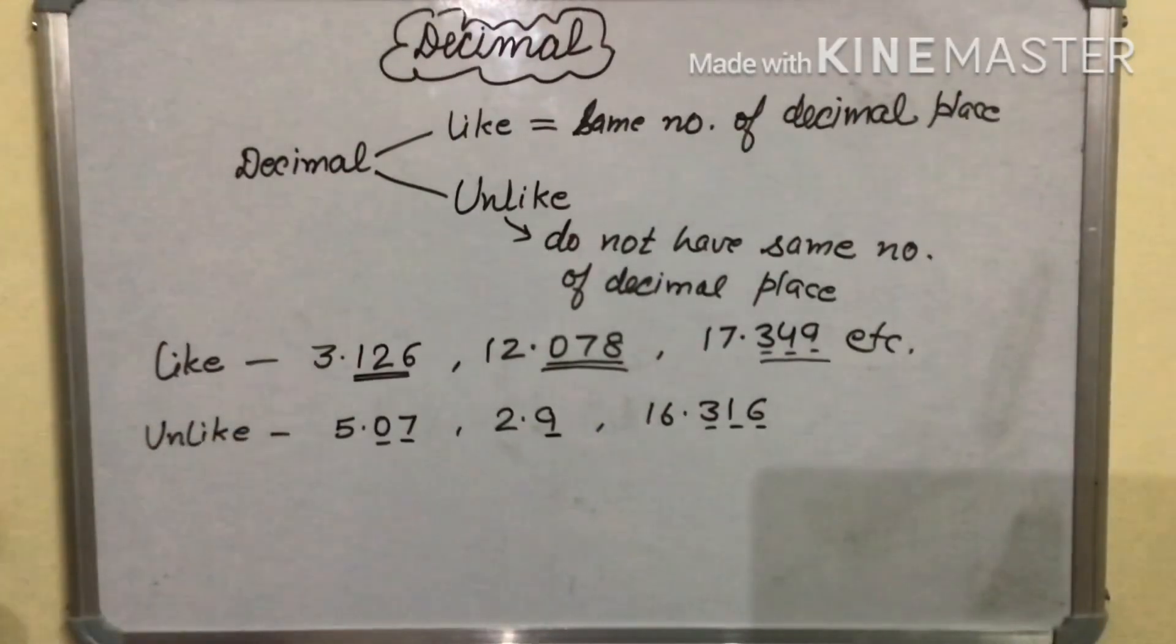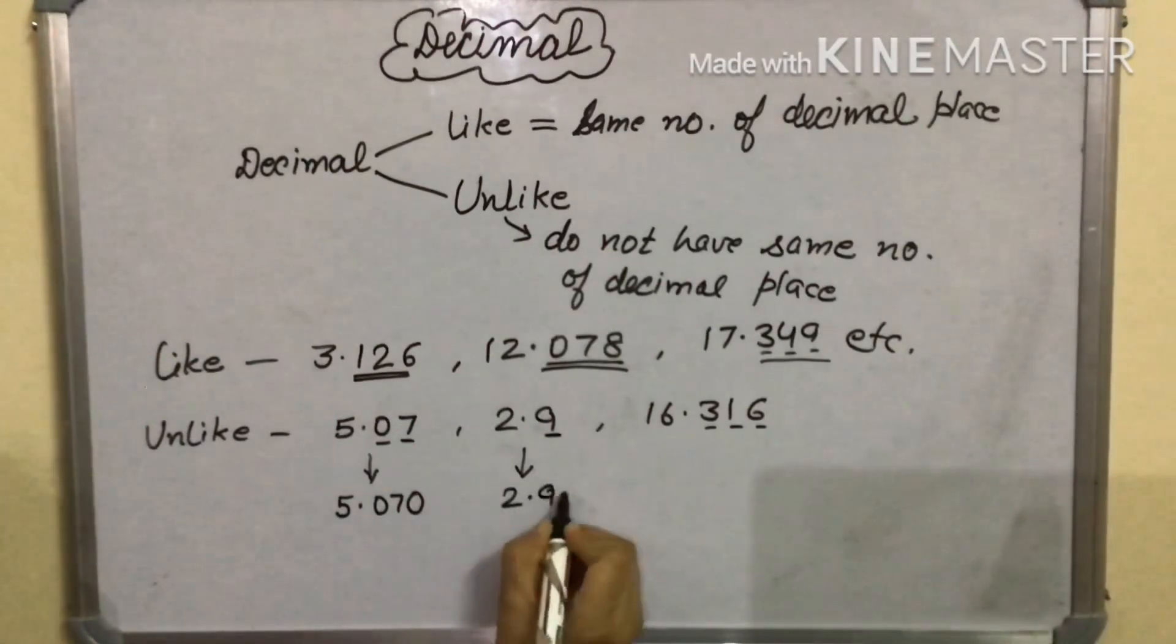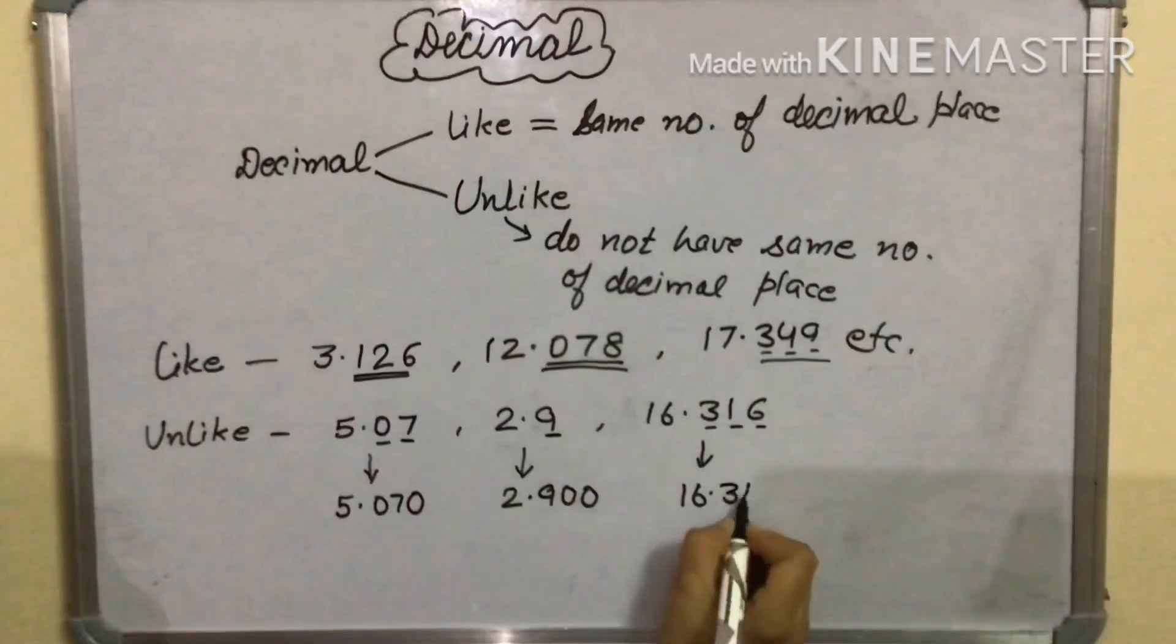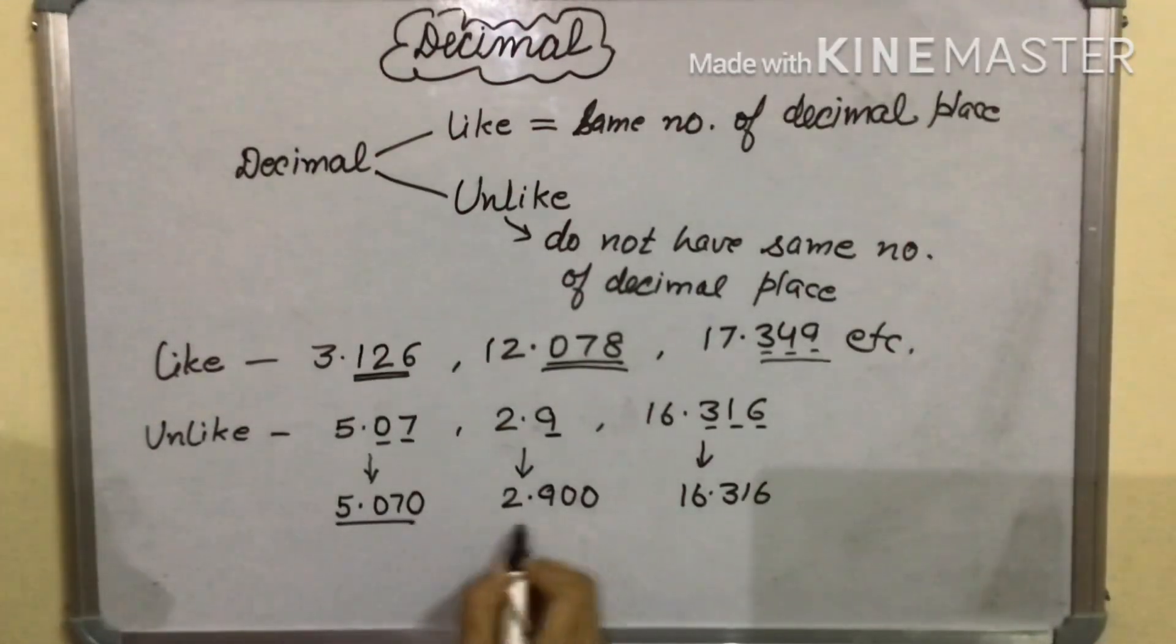Now we can convert unlike decimal into like decimal. We convert it into like decimal. It will be 5.070. We put a 0 in the end and like this it will be 2.900 and this will be 16.316. It will remain same because it already has 3 digits after decimal. Now all these numbers become like decimals.